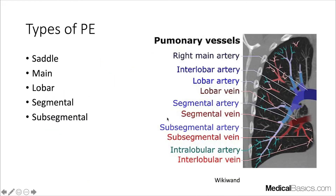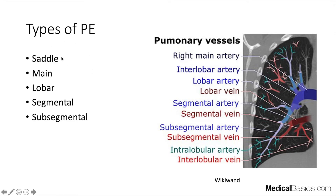Next we'll talk about the radiographic description of PEs. In reports we discuss segmental, subsegmental, and less frequently saddle, main, and lobar pulmonary arteries. Grouping by proximity: saddle is most central, then main and lobar, then segmental, then subsegmental. The more central the PE, the more likely it is to cause problems and strain on the body.